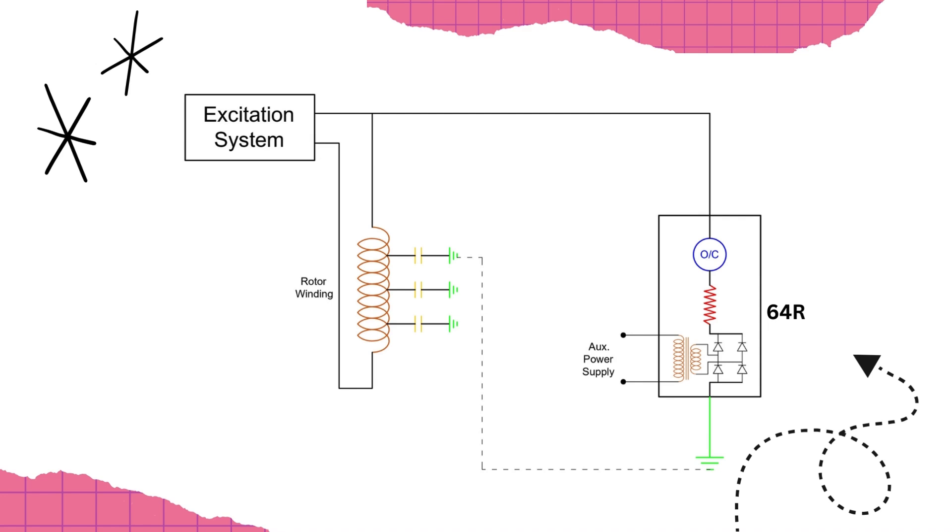During regular operation, no current flows through this relay because capacitors always block DC voltage. However, if a fault occurs in the rotor circuit,